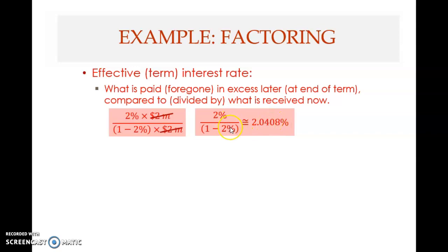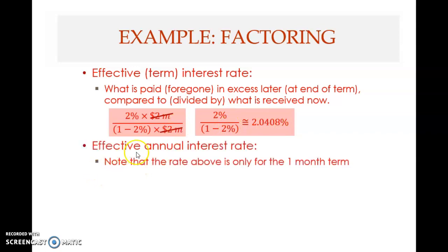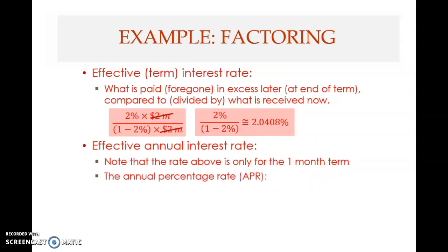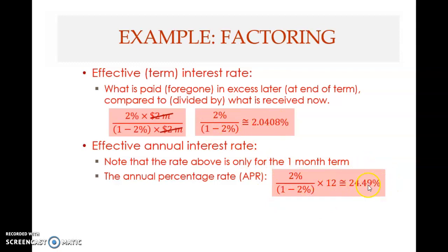That 2.04% is only for one month, because the two million dollars has an average collection period of 30 days. So you can factor the two million in receivables every month, meaning you can do it 12 times. M - the term from chapter six for the number of times interest is compounded in a year - is 12 here. Therefore the annual percentage rate (APR) is 2.04 multiplied by 12, giving 24.49%.